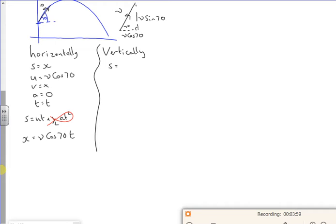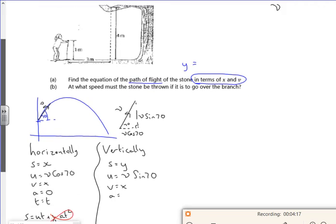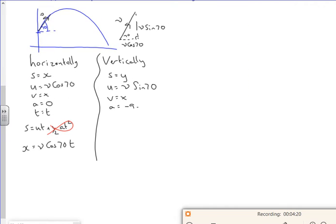S is Y. U is V sine 70. V don't know. A, does it give us acceleration? 9.8, so minus 9.8. And T. If I use this T here, then X over V cos 70 is T. So I'm going to put an X over V cos 70 there.